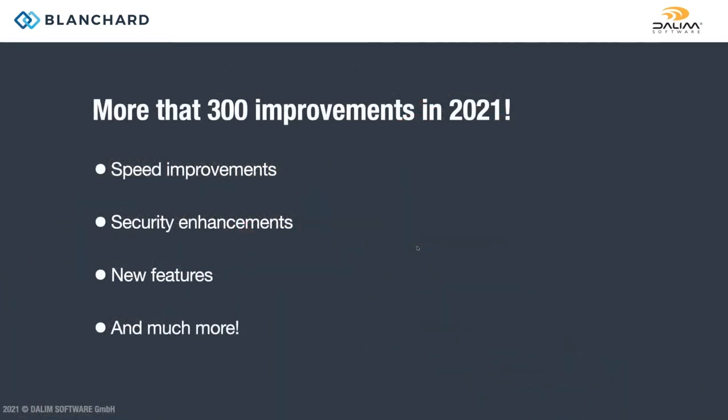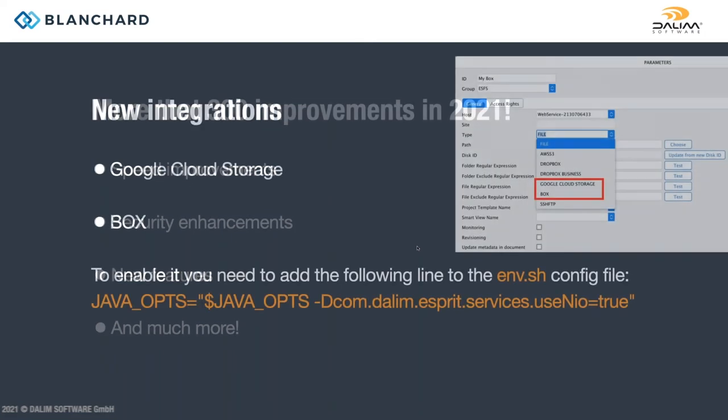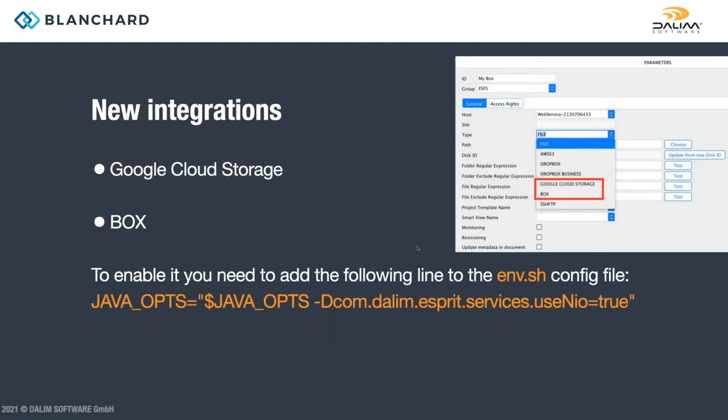According to Darlene, there have been more than 300 improvements done to ES6 in 2021. Those include speed improvements, security enhancements, some new features, and more.